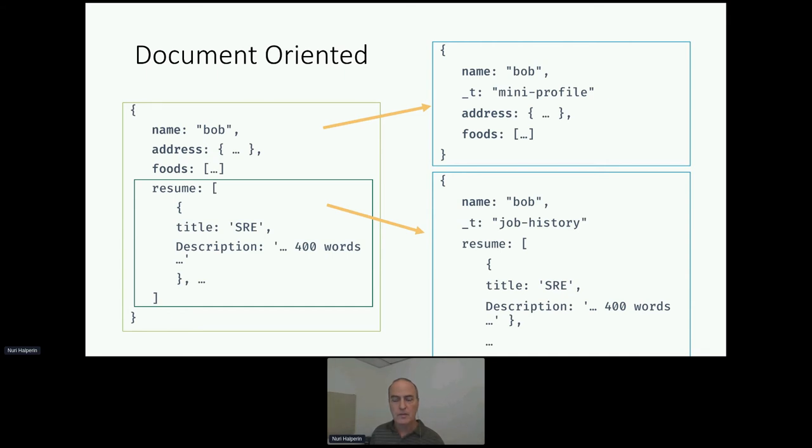And the second document will still be with ID of Bob, but we'll have a type here in the underscore T field that says it's a job history type document. So I can query at the top here, I can query on the underscore T of mini profile for all candidates in summary to show the summary pages. And then in the case a recruiter or a would be interested party wants to know more, they could say, I want to see the job history of Bob. And then they will dig into the collection and dig up those particular documents for Bob and display them.